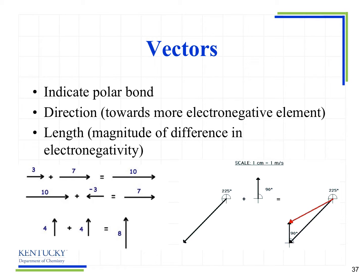We're going to look very briefly at vectors. You may have seen vectors in physics class. Vectors show us two things: magnitude and direction. Here we have a vector of 3 to the right and 7 to the right. We add those vectors together and we get 10. Same thing here: 10 and minus 3, we get 7.